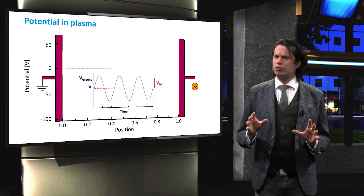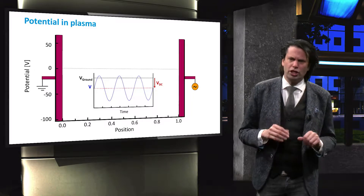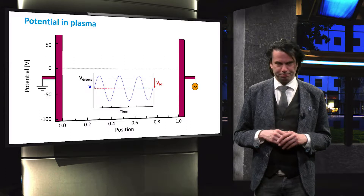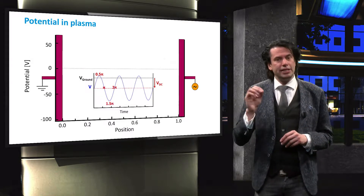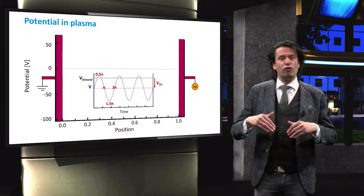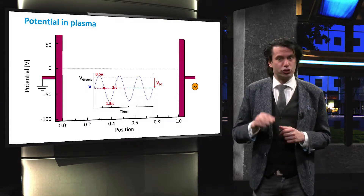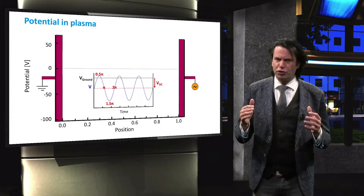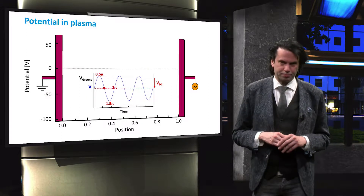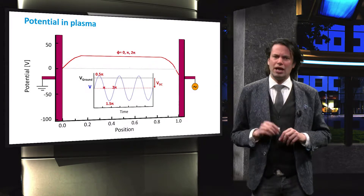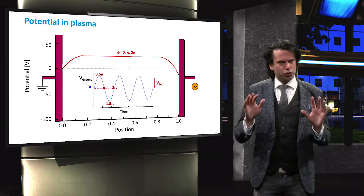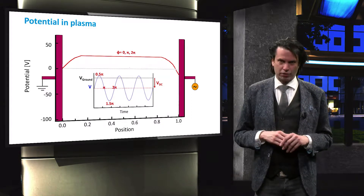Since the powered electrode is connected to an AC voltage source, the potential in the plasma will not be constant over time. At t=0 and at a phase shift of pi and 2pi, the external voltage source applies no voltage, so the voltage observed at the surface of the electrode is equal to the DC offset. The potential at the grounded electrode is 0 volts, and this remains true regardless of the potential of the powered electrode.